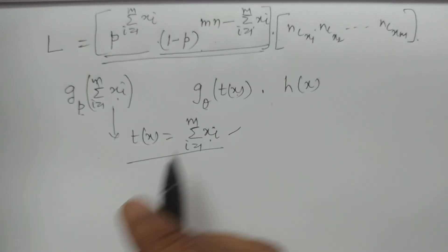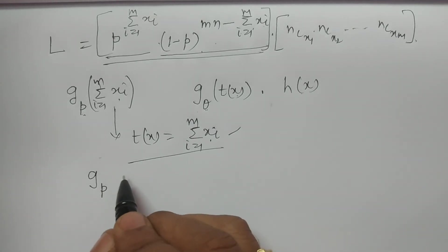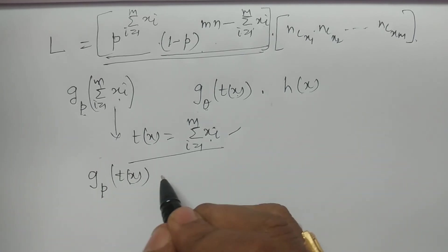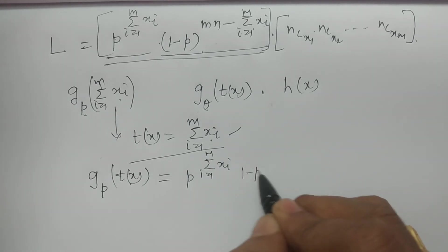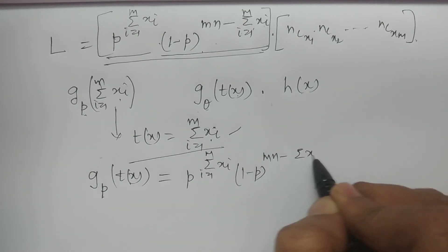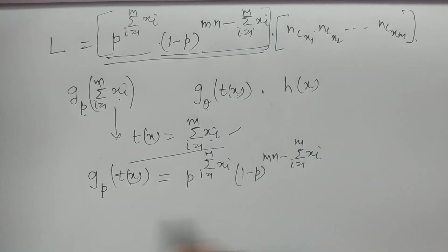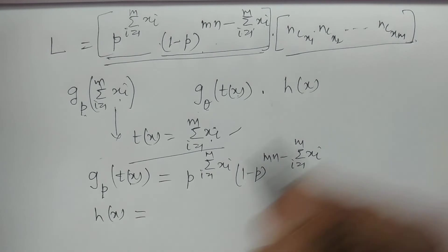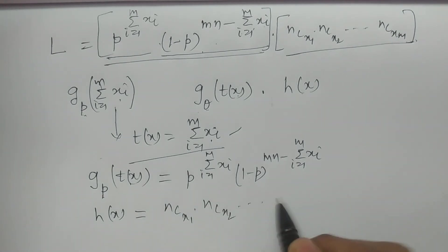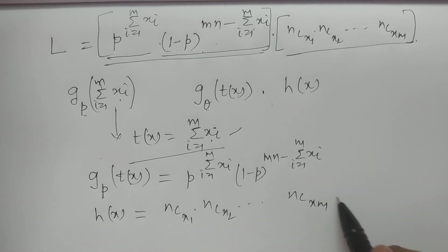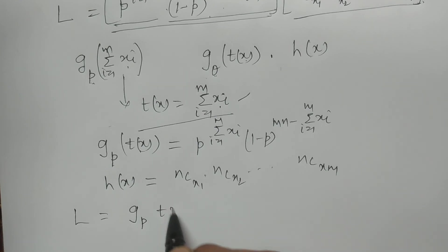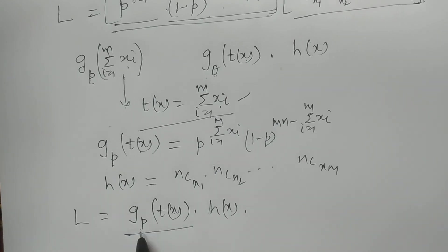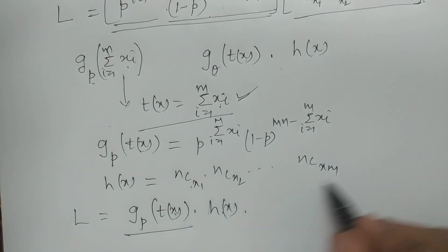Therefore, expressing L = g(p, T(x)) * h(x), where g(p, T(x)) = p^(Σxi, i=1 to m) * (1-p)^(mn - Σxi, i=1 to m), and h(x) = nCx1 * nCx2 * ... * nCxm, which is a function of x only, independent of parameter θ.